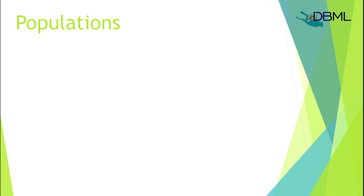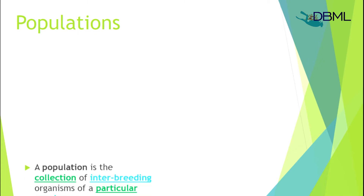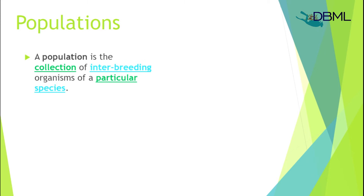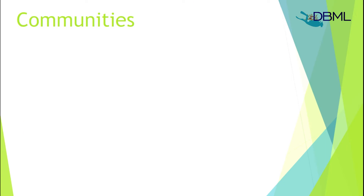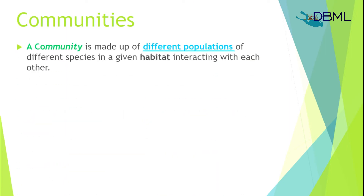When species of the same kind come together, we develop what is called a population. Wherever there is a collection of interbreeding organisms, we have a population. Populations vary — you have humans, egrets, dogs, mongoose, cats. As you can see in the image, we have a bunch of butterfly fish. Once these organisms come together, they form what's called a community — different populations of different species coming together in a specific habitat and interacting with each other.